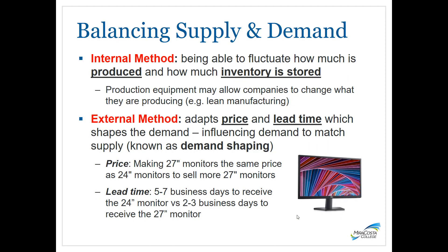When balancing supply and demand, there's an internal method and an external method. Internally, companies decide how much to make and how much inventory to store. Large manufacturers may have flexible equipment to change what they produce and in what quantities, minimizing waste — also known as lean manufacturing. Externally, companies can adjust pricing and lead times to shape demand, where lead time is the time from placing an order to receiving the goods.